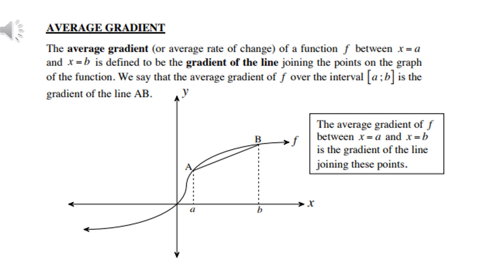If you have a look at the sketch, you will see where a and b are. The first letter a is the first x value and the second letter b is the second x value. Therefore, the gradient between the points a and b will be the average gradient.